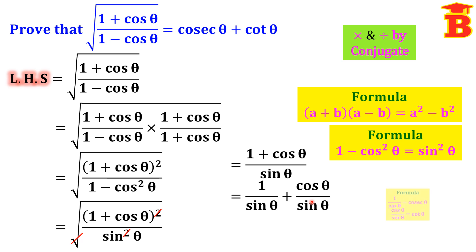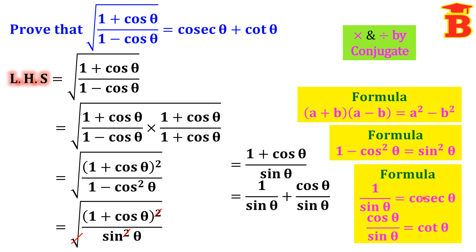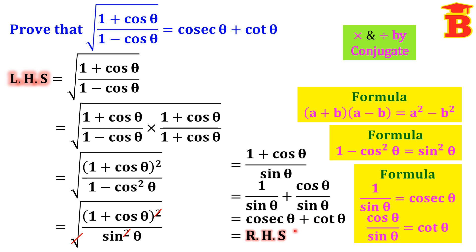Using trigonometry formulas, we know that 1 over sin theta is cosecant theta, and cos theta over sin theta is cot theta. So we can write cosecant theta plus cot theta, which is the right hand side. Therefore, we have proved the identity. Thanks for watching.